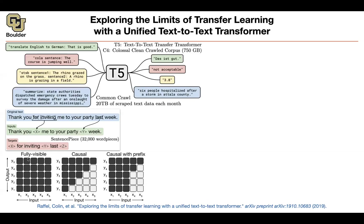Let's recap the masking strategies. One is the encoder type of masking — no masking at all, everybody pays attention to everybody else: Y1 pays attention to X1, X2, X3, X4, X5. For causal masking, which is the decoder part, you mask half the matrix: Y1 pays attention to X1 only, Y2 pays attention to X1 and X2, etc. There's also an intermediate version where some portion of the text always has full attention, while others use causal masking — that's causal with prefix.